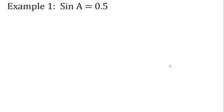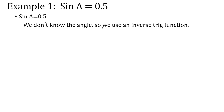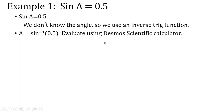Let's start with our first example: sine of A equals 0.5. Notice they don't give us a triangle — we're just figuring out what angle A is. We're going to use the inverse trig functions on our decimal scientific calculator. We rewrite the original function solving for A by taking sine inverse of both sides. Sine will cancel with sine inverse, and we end up typing sine inverse of 0.5 into our scientific calculator.